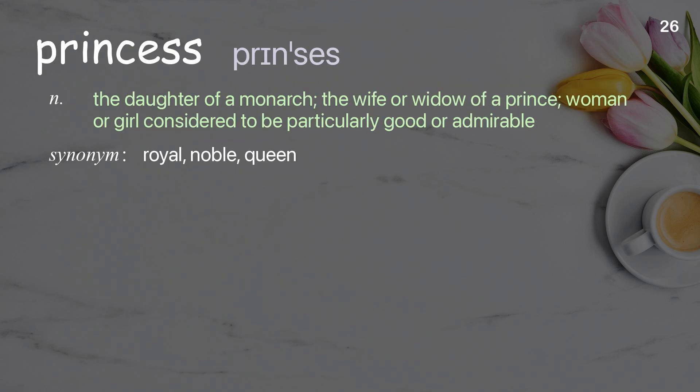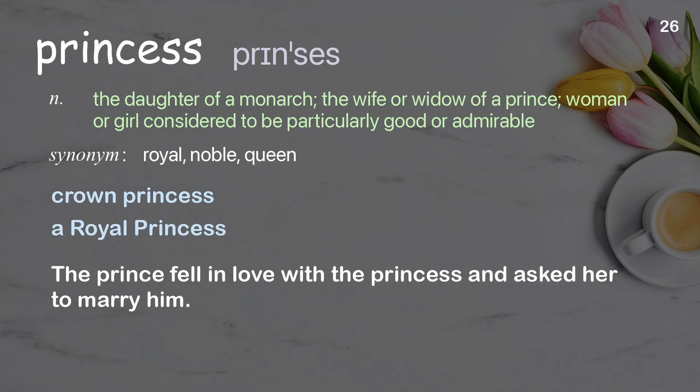Princess: the daughter of a monarch; the wife or widow of a prince; a woman or girl considered to be particularly good or admirable. Examples: crown princess, a royal princess. The prince fell in love with the princess and asked her to marry him.